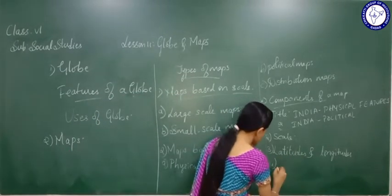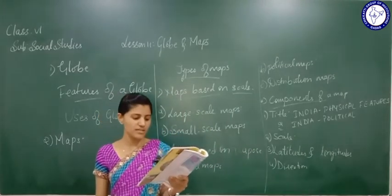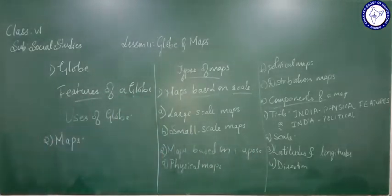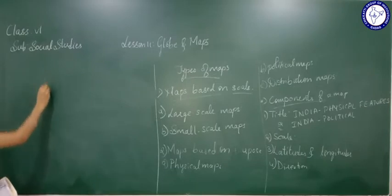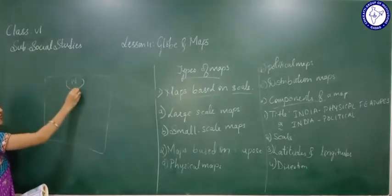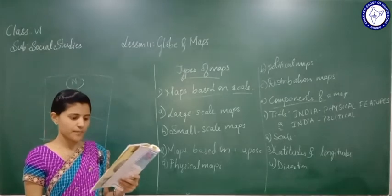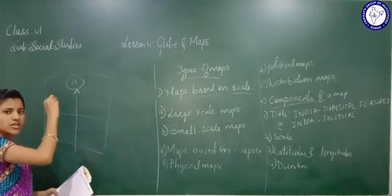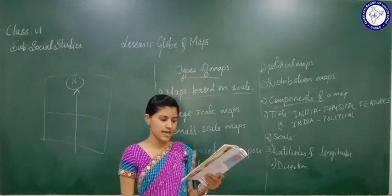Next is direction. In a map, the direction is shown by the symbol of an arrow with the letter N on the top. On the top of the map, there is a north direction arrow. Depending upon this direction of north, we can identify all the other directions — south, east, and west. The head of the arrow points to the north, and once you know the north, you can easily find the other directions.